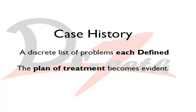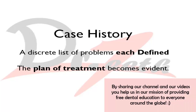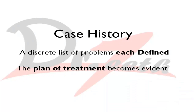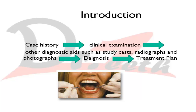If your case history is right, your clinical examination will accordingly be right. If your clinical examination is right, diagnosis will be right, and then your treatment plan will be right. So if something goes wrong in the case history, it can affect your treatment plan. The purpose is that the diagnosis and a preliminary treatment plan should become evident at the time of taking case history.